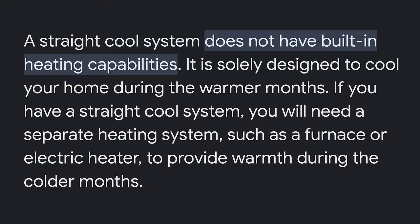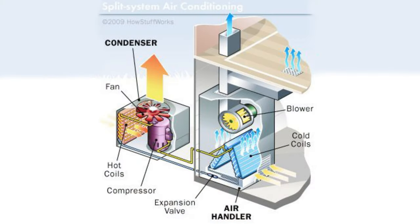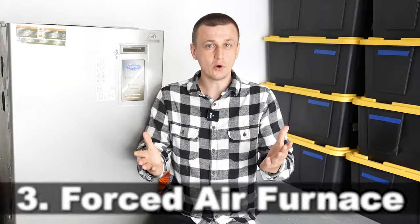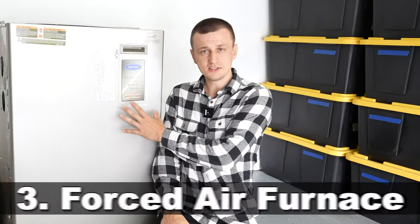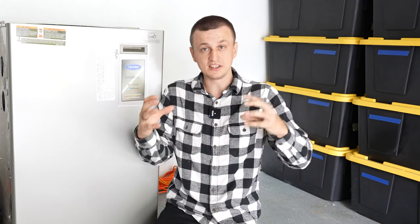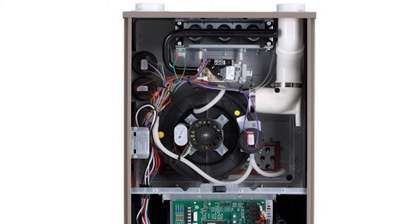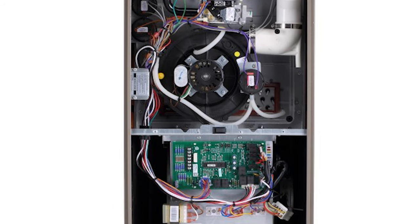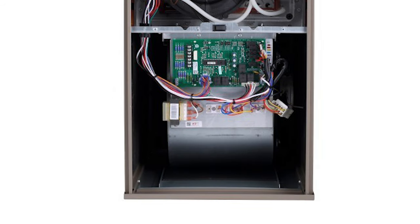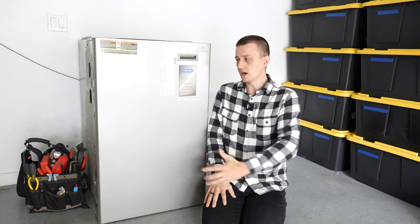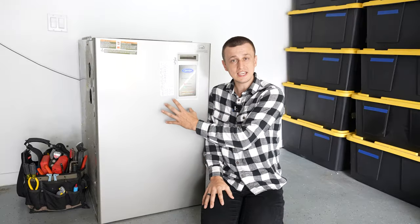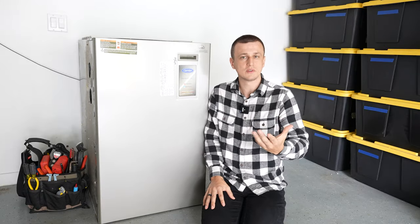The fact that it's a straight air conditioner simply means that there is no heating inside of the house. So in a setup like this, the air conditioner would be paired with an air handler — the AC does the cooling, and the air handler distributes the cool air throughout the house. Number three is a forced air furnace. A furnace like this is simply an air handler that has heating components added to it, with a blower motor inside that circulates the air in the house.